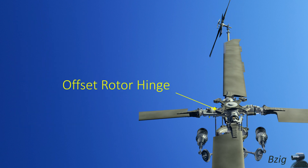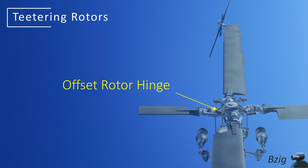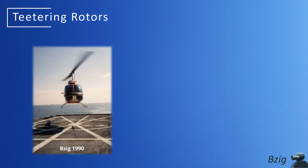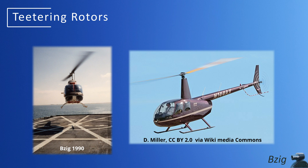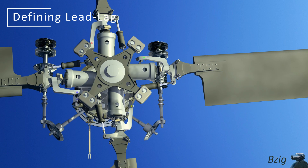Lead lag is only necessary on rotors that have offset flapping hinges. Underslung teetering rotors, like on the Bell 206 and the Robinson R44, flap about a point that's close to the rotor center of rotation. Because of this, they don't need the lead lag. These are stiff and plain rotors and we're not talking about those types of rotors in today's video.